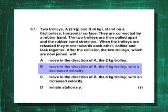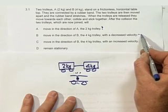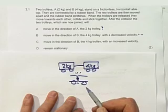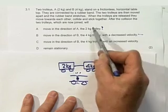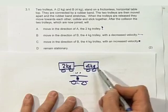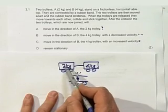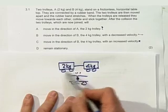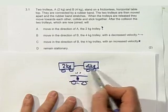Move in the direction of B, the 4 kg, with a decreased velocity—not too bad, I'm not entirely happy but it's a bit more plausible than this one. Move in the direction of B, the 4 kg trolley, with an increased velocity? Now surely not. I mean, it's going to have to take account of the momentum of this, so now that's not right.